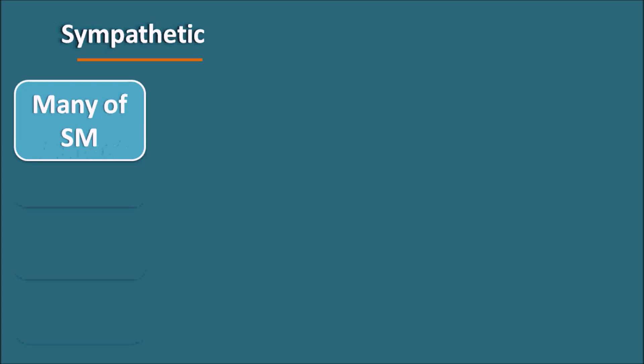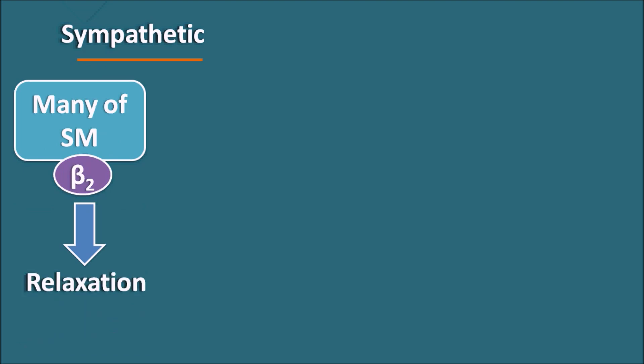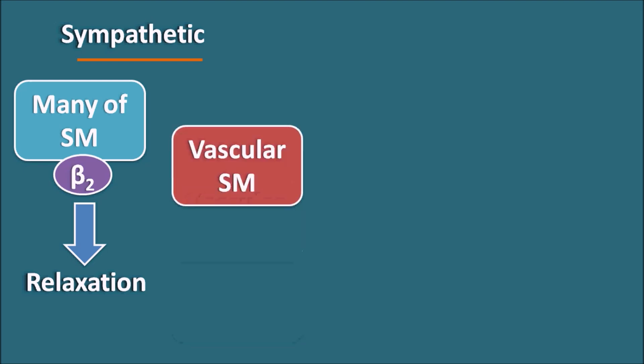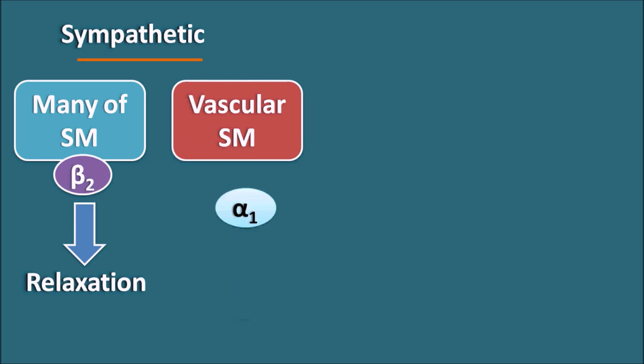Now let us make a small generalization regarding the effect of the sympathetic and parasympathetic system on smooth muscles. At many smooth muscles, beta 2 receptors are present which are responsible for relaxation. So various smooth muscles like the GI smooth muscle, bladder, bronchial smooth muscle, and smooth muscles at the eye are all relaxed by the sympathetic system through beta 2 receptors.